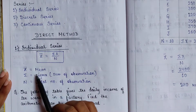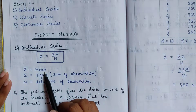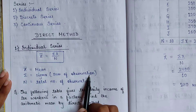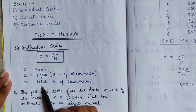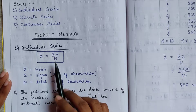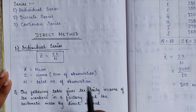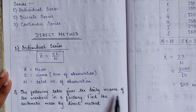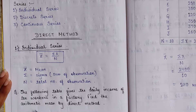If a question is given in individual series, we will use the formula: x̄ = Σx / n. Here x̄ denotes the mean, Σ denotes the sum of observations, and n is the total number of observations. Now let's solve the question — find the arithmetic mean by direct method for the daily income of 10 workers in the factory.